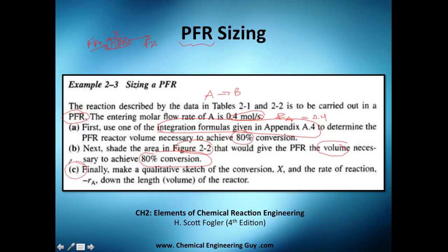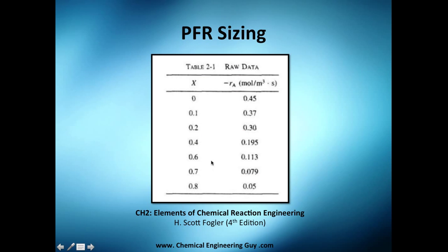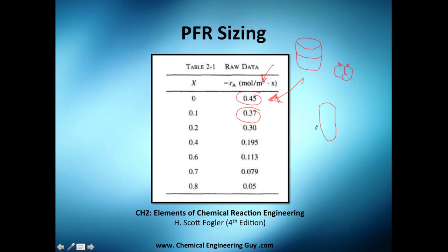Finally, part C asks you to make a qualitative sketch of conversion versus: one, the rate of reaction, and two, the volume. The data given is very typical of a chemistry lab experiment — you have a fixed volume reactor, you time with a chronometer, and you measure concentration by analytical chemistry. The conversion is then calculated from that data.